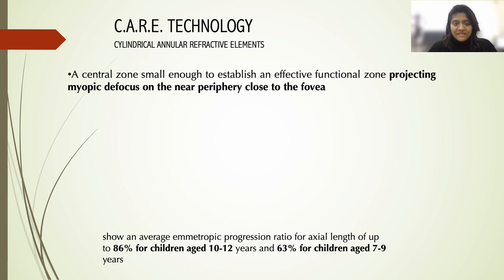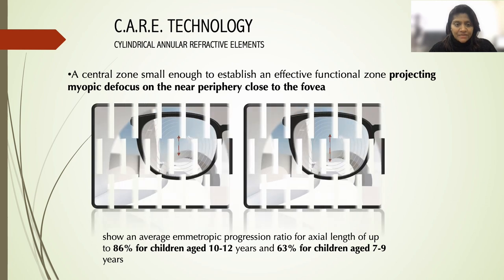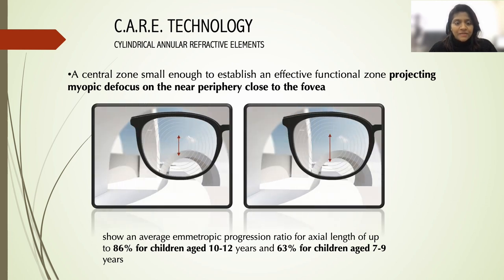Another technology is the CARE technology, which uses Cylindrical Annular Refractive Elements to create myopic defocus in the periphery. It comes in two designs with different sizes of central clear zone for myopia correction, followed by annular rings of refractive elements. Studies with this technology have shown that the average emmetropic progression ratio for axial length was up to 86 percent for children between 10 to 12 years of age, and about 63 percent for children between 7 to 9 years of age.